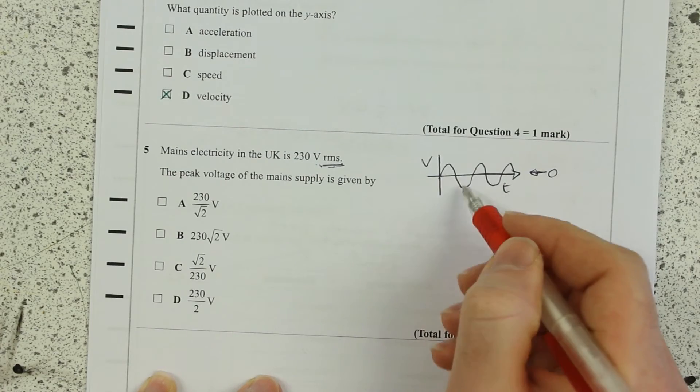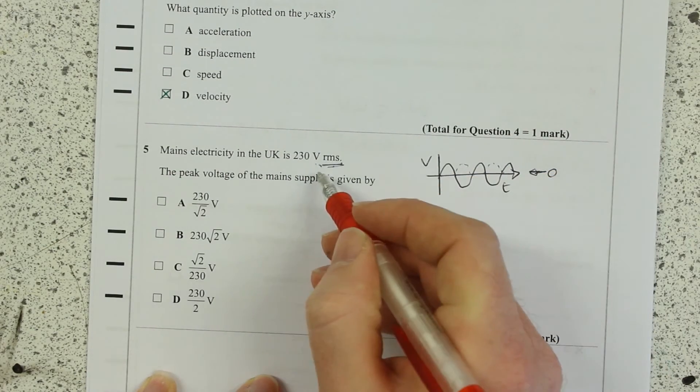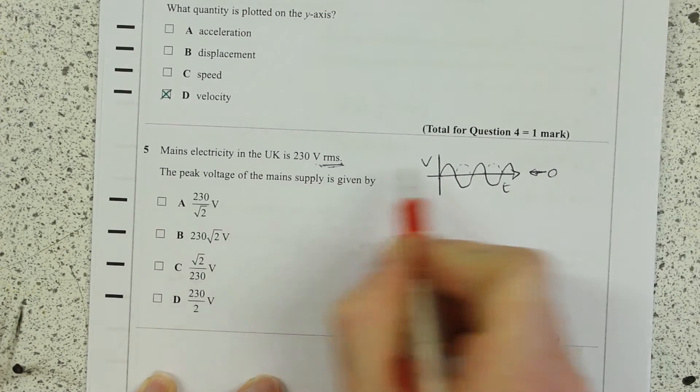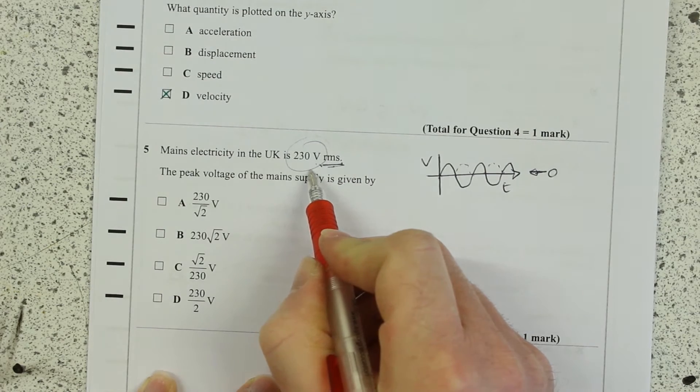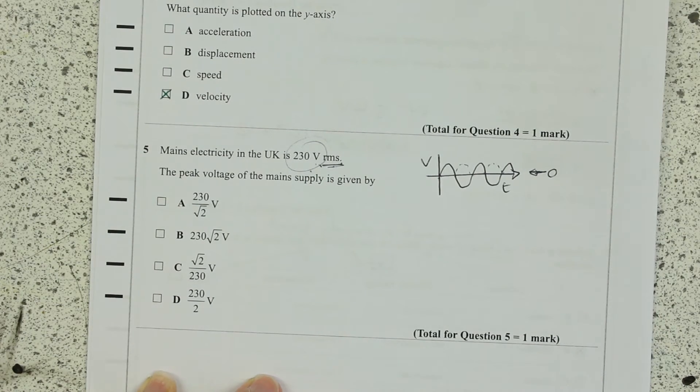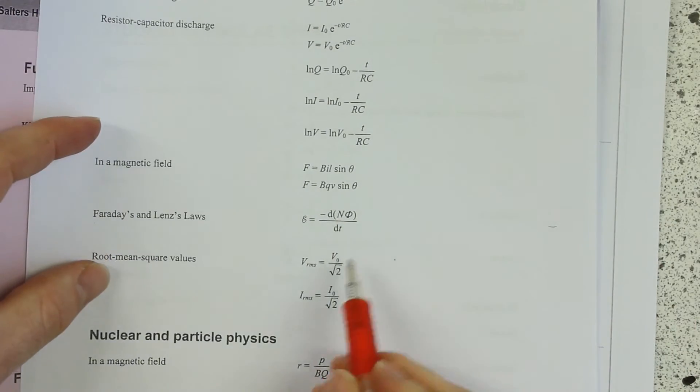So what you do is you square them all, and that means they will be positive once you square everything. And then you average those squares and then you root that. And the root mean square is 230. And again, in your formula sheet, know your formula sheet on the back of your hand—it's going to speed you up, especially in areas like this.